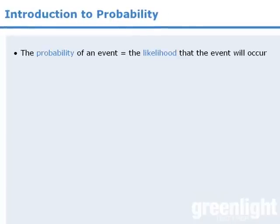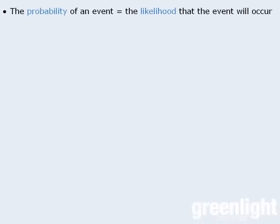To begin, probability is a quantity that measures the likelihood that some event will occur. So when we speak about the probability of an event, we are trying to assign a number to the likelihood that the event will occur. The probability of any event ranges from 0 to 1. The greater the probability, the more likely the event will occur.